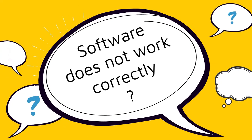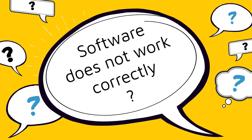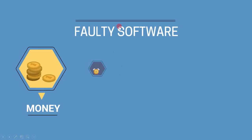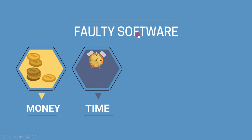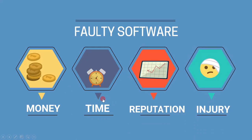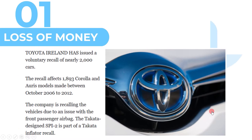What will happen if the software does not work correctly? Such software is called faulty software. Faulty software can result in loss of money, time, reputation, or in extreme cases can result in injury or death. Let's see some real-time examples to understand these impacts.